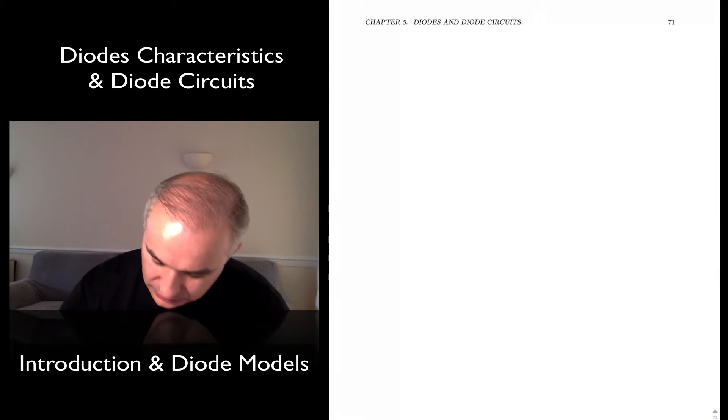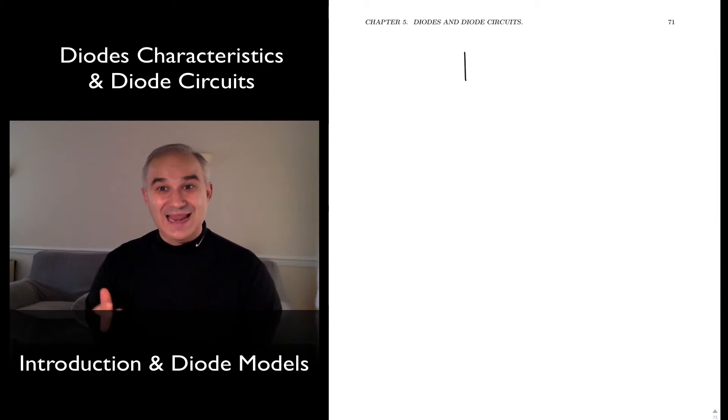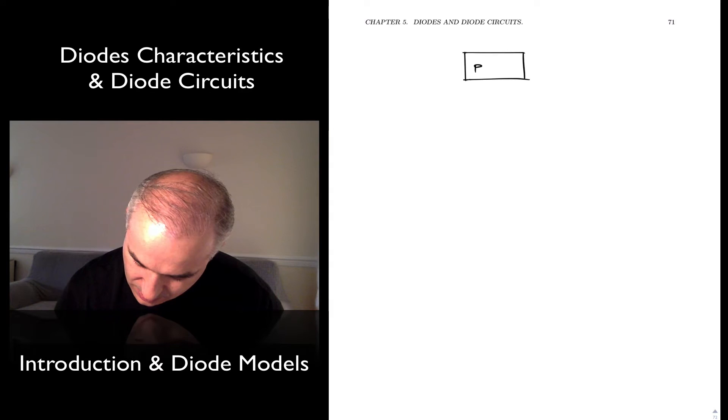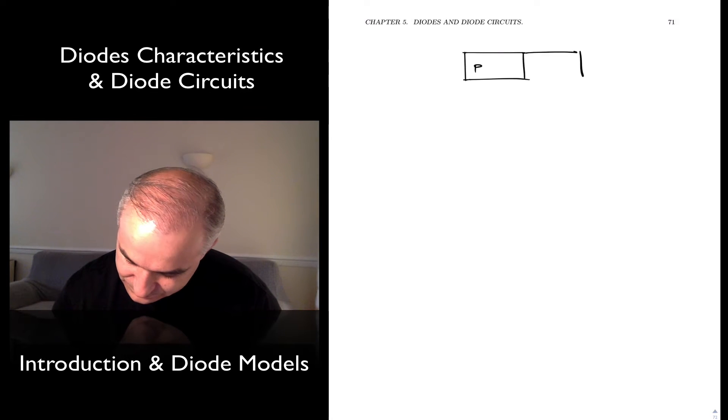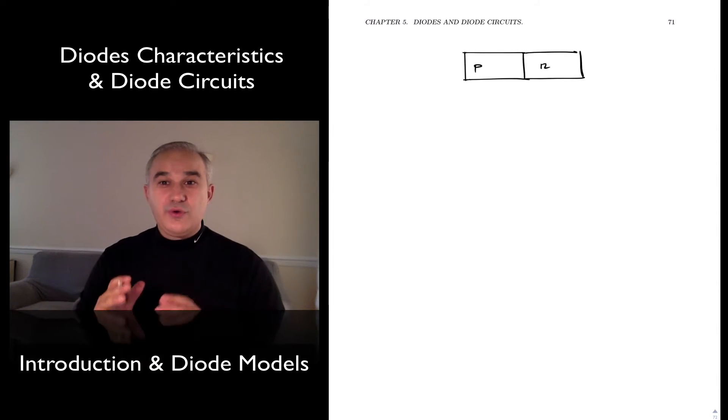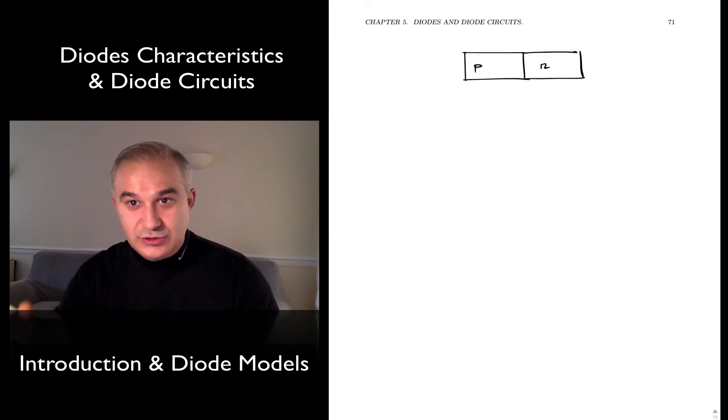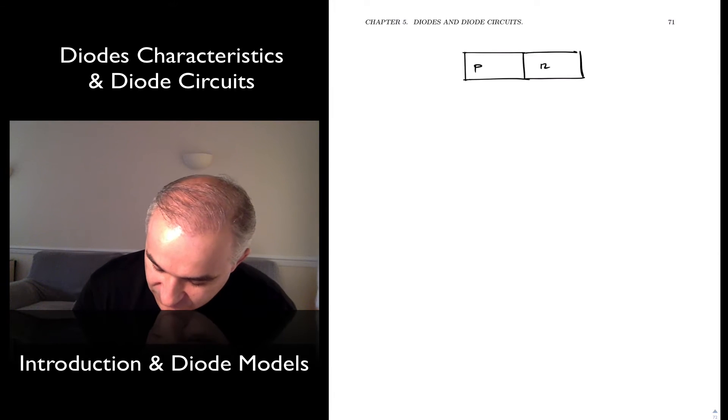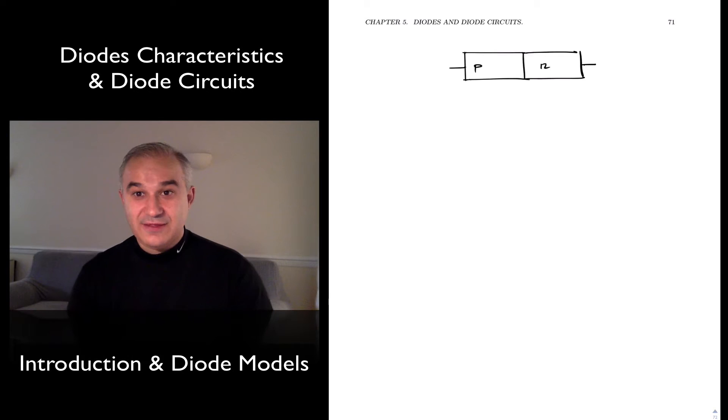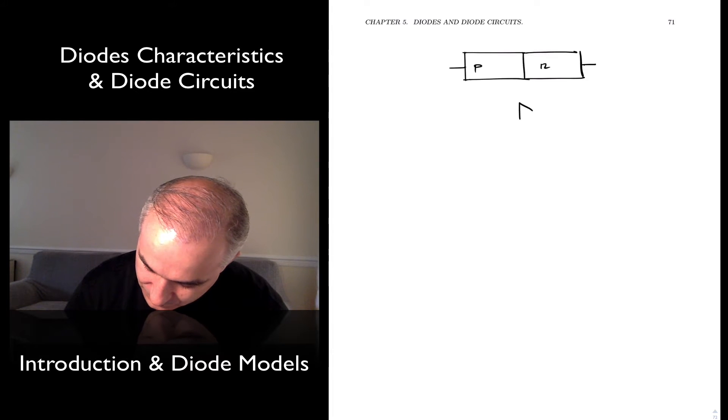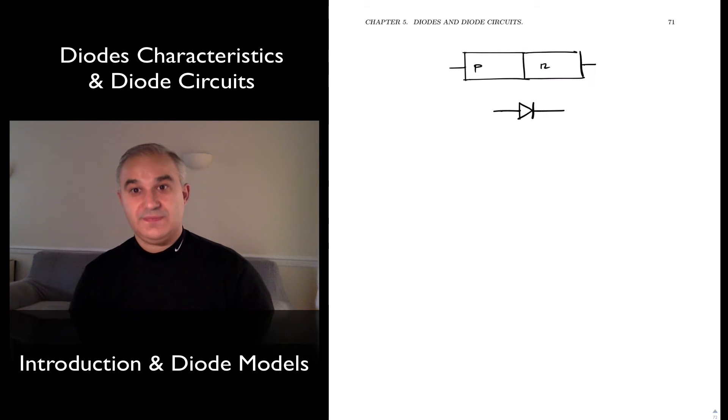So if you recall from the last chapter on semiconductor physics, if we connect p-type and n-type material, doped silicon, we create a new structure. This structure is a building block for many other devices like transistors. But if you just create a device by itself with p and n, nothing else, you have a diode. This is the symbol for the diode, and we would like to use it because it's a useful new semiconductor device.